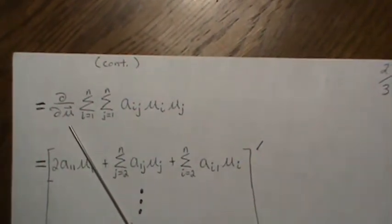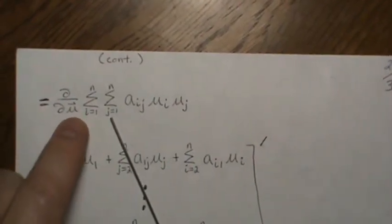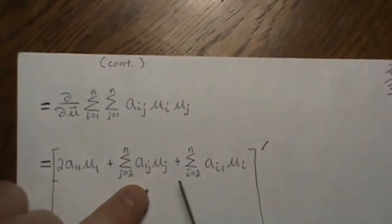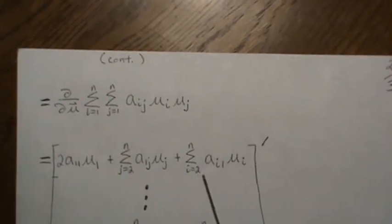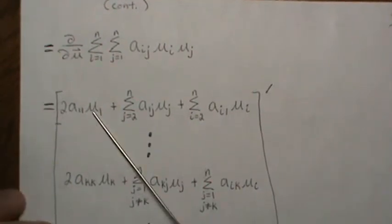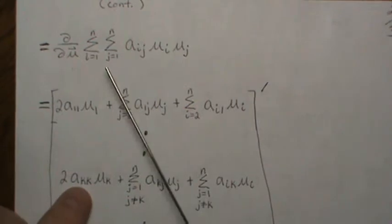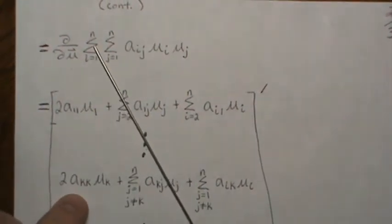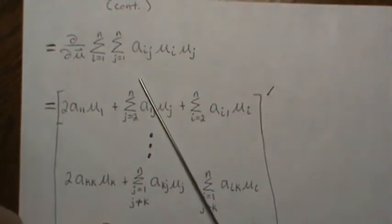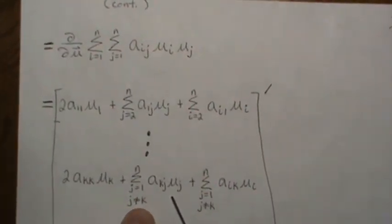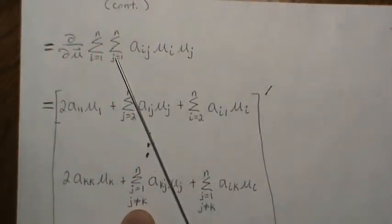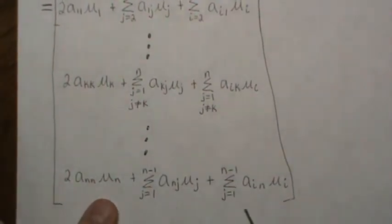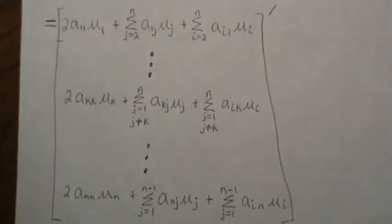We do that for μ_2, μ_3, and so on. Notice that when taking the derivative with respect to μ_k: when both i and j equal k we get a factor of 2 out front; then setting i=k and summing over all j≠k gives one piece; and setting j=k and summing over all i≠k gives another piece. We do this same thing for the nth component μ_n and get the same structure.